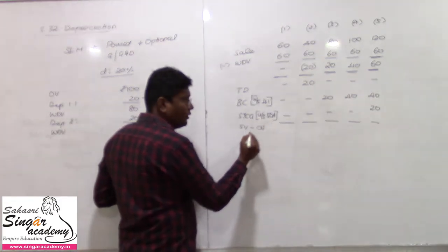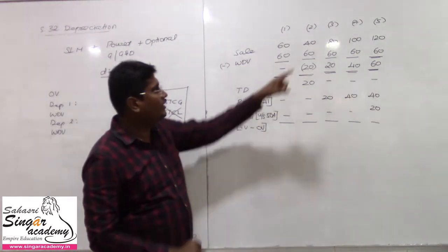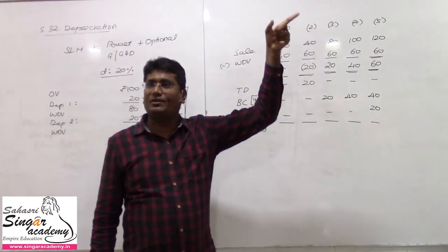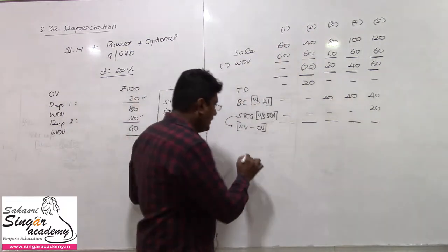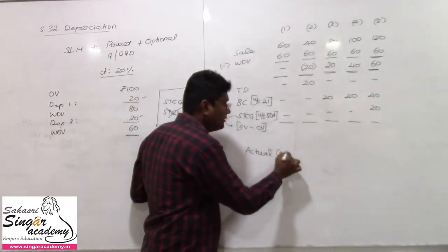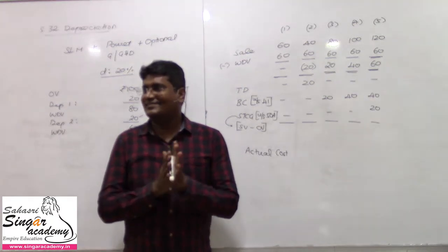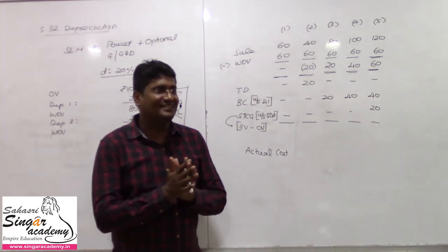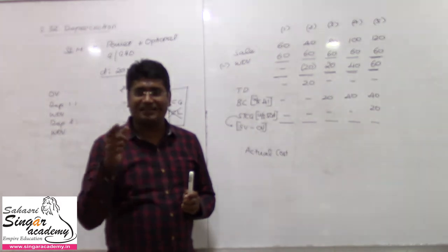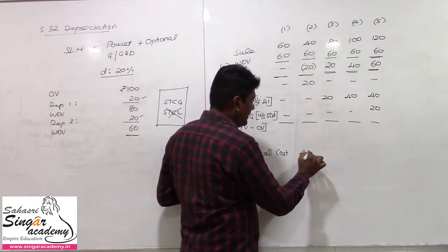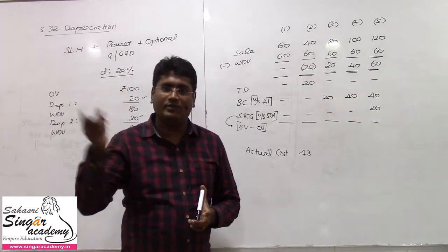Short-term capital gain equals sale value minus original value, provided it is positive. In this notation: sale value 120, original value 100. Original value means actual cost. Actual cost — we have a complete set of explanations to find out the actual cost, which is the next lecture. Section 43 defines actual cost.